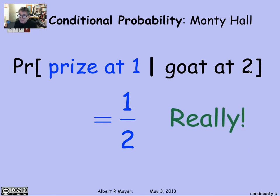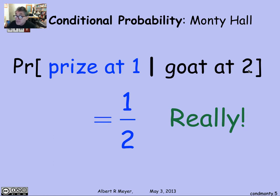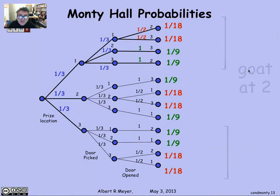That's the argument people were making: when the contestant sees that the goat is at door 2 and is trying to decide whether the prize is at door 1 or the other door, it's equally likely — so it doesn't matter whether they stick or switch. That is a correct argument, but it's not calculating the probability of the stick strategy winning. Why? Because there's more information available than just 'goat is at 2.'